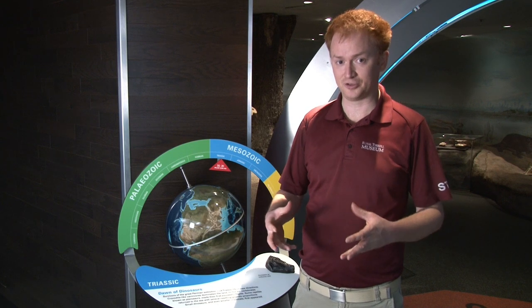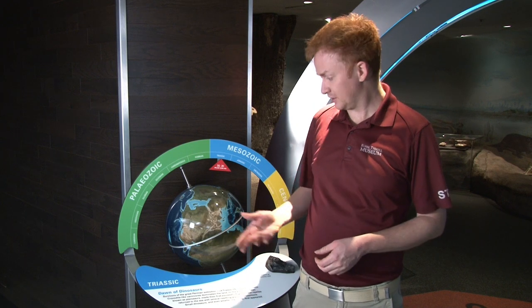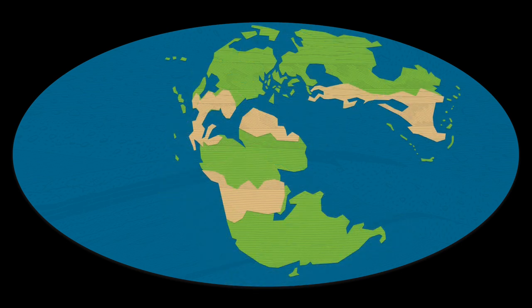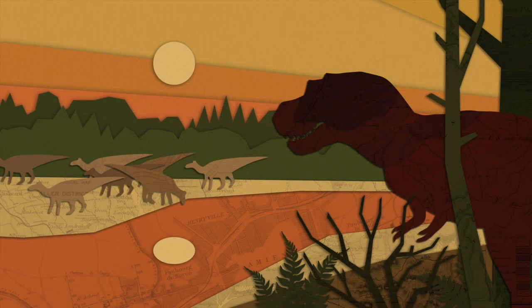Geologic changes can be important milestones in the history of life too. Before the dinosaurs, Earth's continents packed together into a supercontinent that we call Pangaea. Pangaea broke up again during the early Jurassic, and separated continents allowed the evolution of a lot of diverse dinosaur groups around the world in the Jurassic and the Cretaceous.